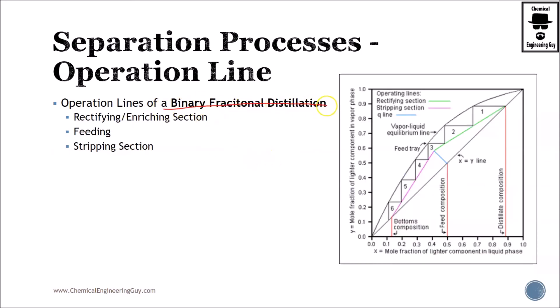In binary fractional distillation, you will have three lines. The first one, the rectifying, which enriches the material. You will have the stripping section, which gets rid of the most volatile component. And very important, depending on how you add your feed and in which tray you add your feed, you will be adding the q line or the feeding line.